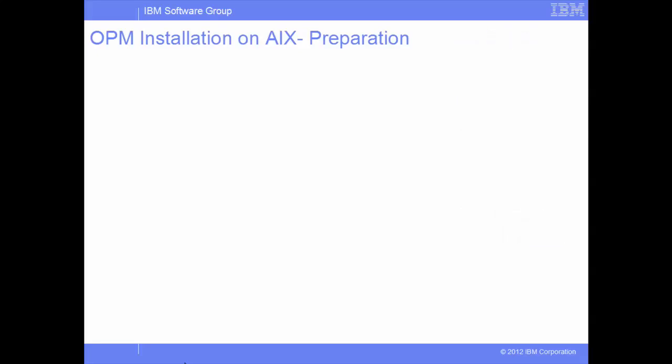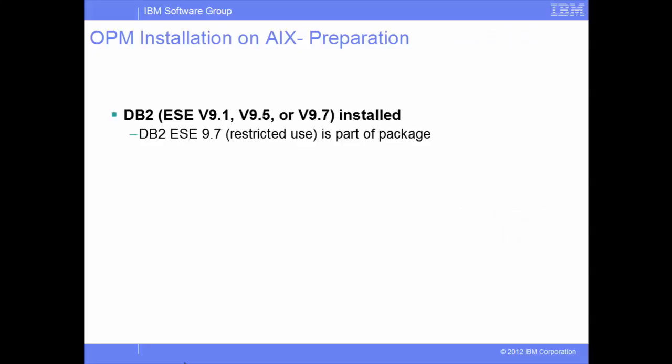There are a few things that need to be prepared for installation on AIX. First, we should have DB2 installed on the machine before this installation because a repository database needs to be created in DB2 during the installation. If the server where Infosphere Optum Performance Manager will be installed already has DB2 ESE 9.1 or later, we can use it. Otherwise, we can use the restricted use license of DB2 Enterprise Server Edition version 9.7 that is included with Infosphere Optum Performance Manager.